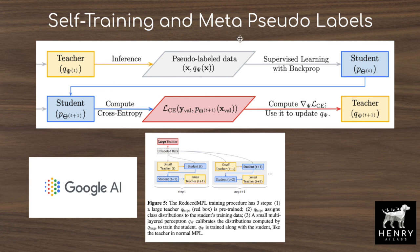Meta pseudo labels serves a similar purpose: correcting the label distribution that the student network is learning on, to align the task between unlabeled and labeled data. In self-training, the previous model is used to label the data; in meta pseudo labels, a gradient-based meta controller operation controls the label distribution.